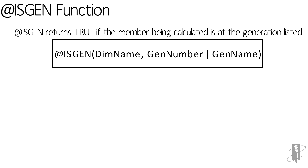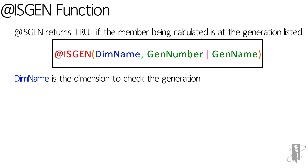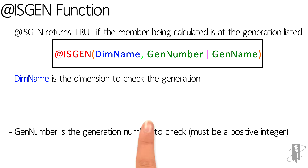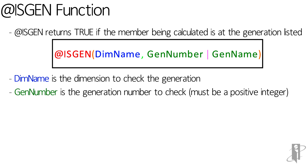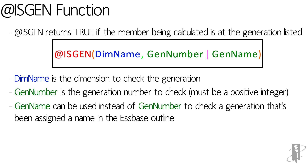In our syntax we have isGen, open parentheses, dimName, comma, and either your genNumber or genName followed by a closed parentheses. The dimName is the dimension we want to look in. The genNumber is the generation — we have to remember that it needs to be a positive integer. Instead of using a genNumber you can use a genName, as long as the generation has been assigned a name in the S-Base outline.